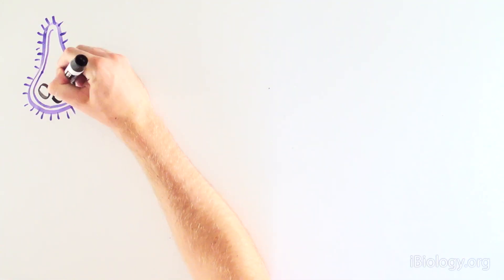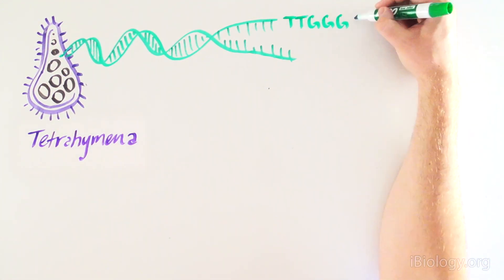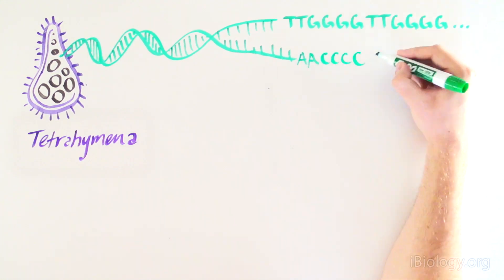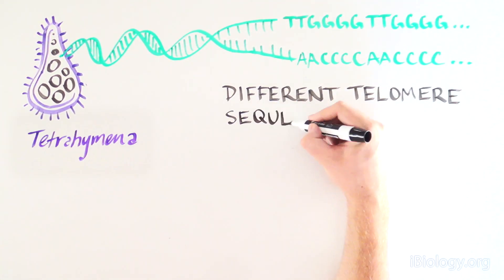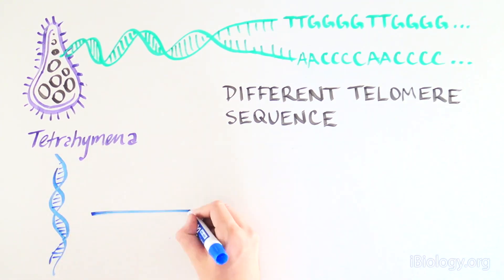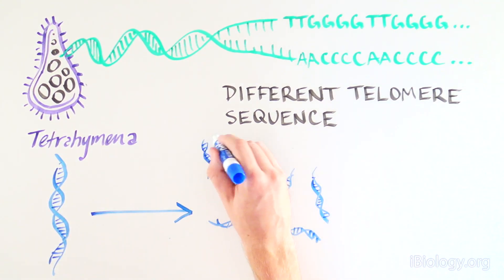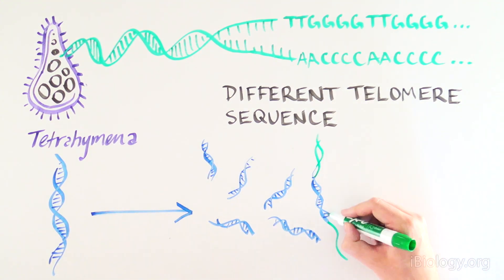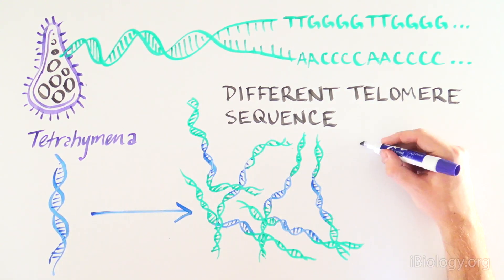Here the two scientists used an interesting organism called tetrahymena that also has telomeres. However, its telomere sequence is a little different: T-T-G-G-G-G instead of T-T-A-G-G-G repeats. This organism undergoes a stage in development where it breaks up its DNA into hundreds of small pieces, and each piece of DNA gets its own telomere at both ends.